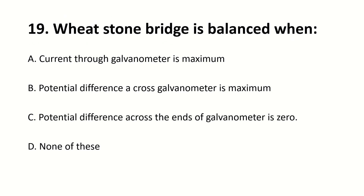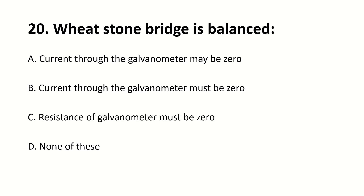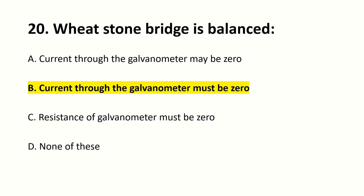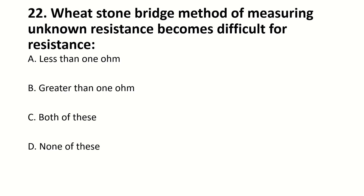The Wheatstone bridge is balanced when — blank. Right answer is C: potential difference across the ends of the galvanometer is 0. Also, right answer is B: when current through the galvanometer is 0. Under balanced condition, the expression for the Wheatstone bridge is given by — blank. Right answer is B: R1 divided by R2 equals R3 divided by R4. The Wheatstone bridge method of measuring unknown resistance becomes difficult for resistance — blank. Right answer is A: less than 1 ohm.